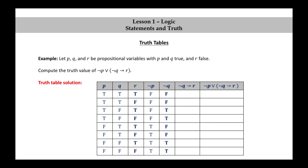For the column under not Q implies R, we use the columns for R and not Q — making sure to read left to right in the right direction. Since true implies false is the only time we get false, we find those first — they occur in the fourth and eighth rows. Then we fill in the rest with T's, because all other possibilities give T for the implication.